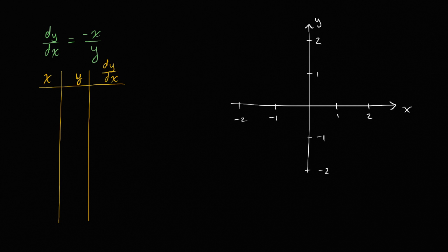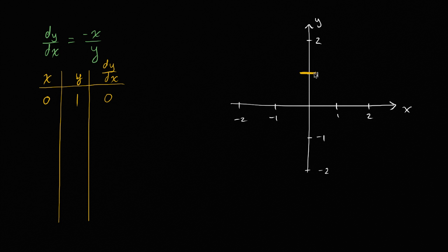When x is zero and y is one, the derivative dy/dx is going to be negative zero over one, so it's just going to be zero. At the point (0, 1), if a solution goes through this point, its slope is going to be zero. We can visualize that by drawing a little horizontal line segment right there.